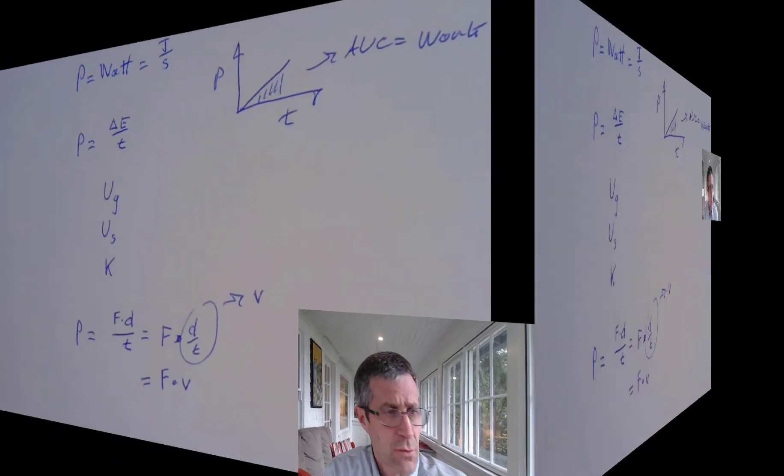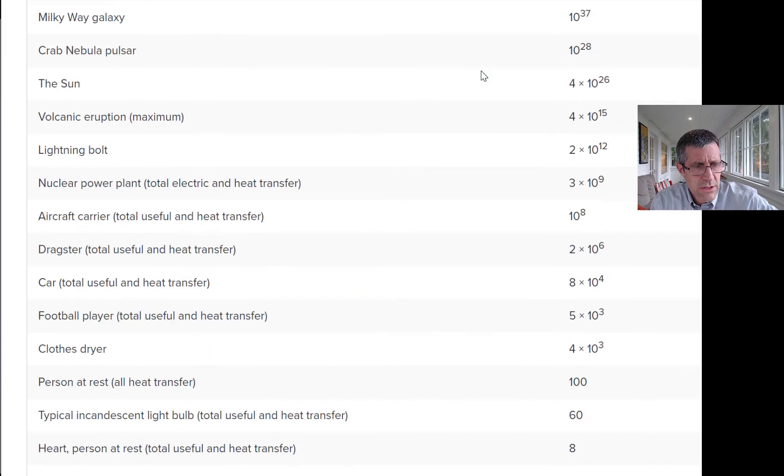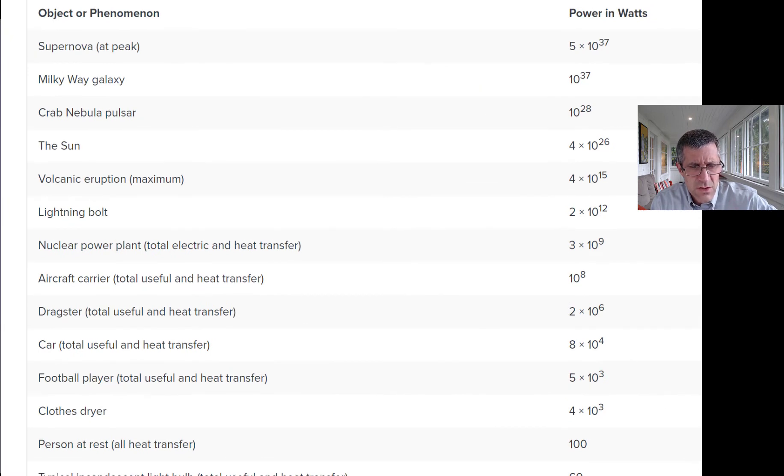Power is used for a lot of things. One of the things I think is kind of fun to look at - some places that power can be used. A supernova at peak power is going to put out five times 10 to the 37 watts. Good grief, that's a lot of zeros. The Milky Way galaxy puts out almost that much power as a whole.